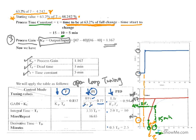For the integral time TI in minutes per repeat: TI equals 3.33 multiplied by TD. TD is 5, so 3.33 times 5 equals 16.65 minutes per repeat. I hope you now understand the configuration and how to calculate the parameters from the process reaction curve — this is very important, especially when you go into industry to tune PID control loops.